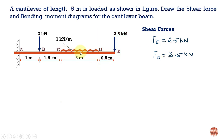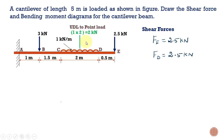We have a uniformly distributed load acting at section C. Let us convert this UDL into a point load. The intensity of the UDL is 1 kilonewton per meter, multiplied by the length of the section on which it acts, which is 2 meters. So the equivalent point load is 2 kilonewtons, acting at the midpoint of that section — that is, 1 meter from C and 1 meter from D.